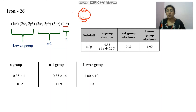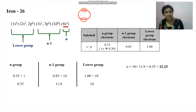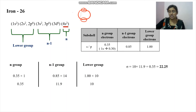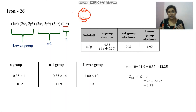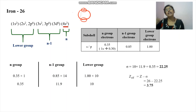The screening constant σ = 0.35 + 11.9 + 10 = 22.25. The effective nuclear charge for the 4s electron in iron is Z_eff = Z − σ = 26 − 22.25 = 3.75. This is how Slater's rule is applied to calculate the effective nuclear charge for any electron in a given atom.